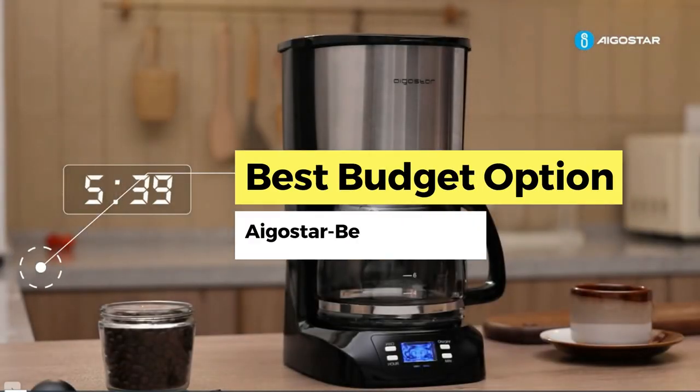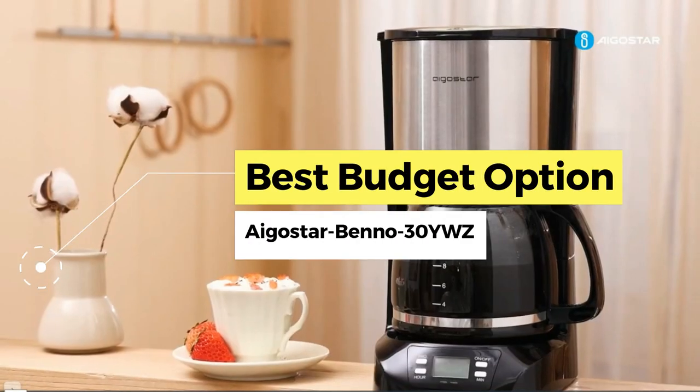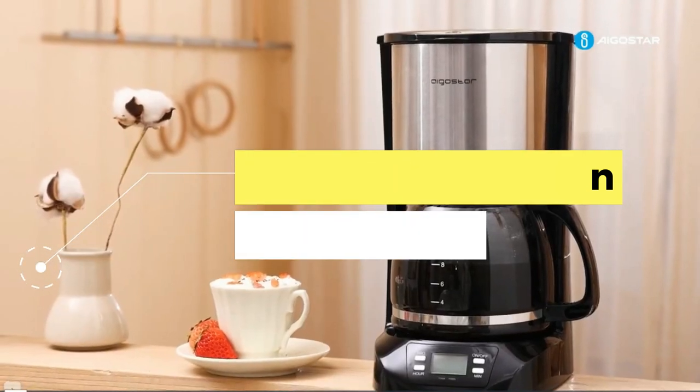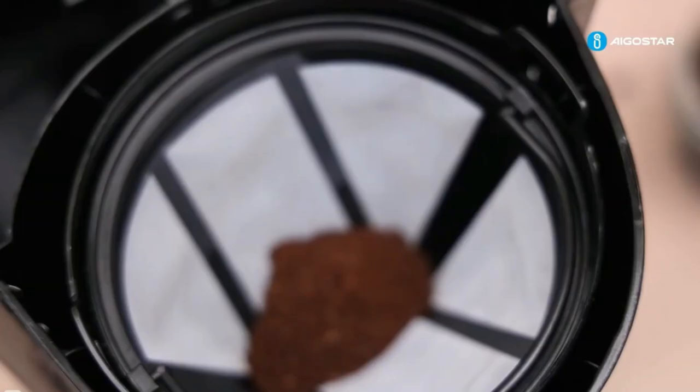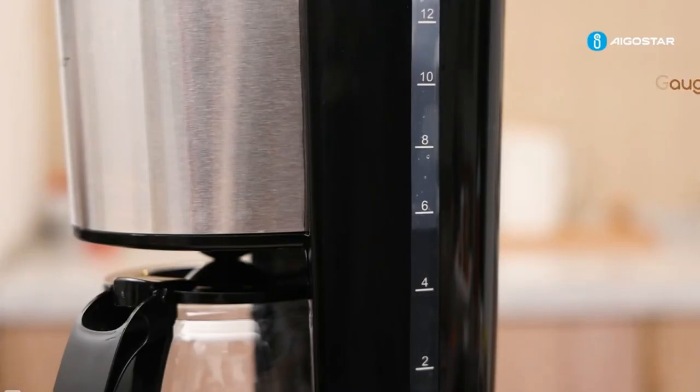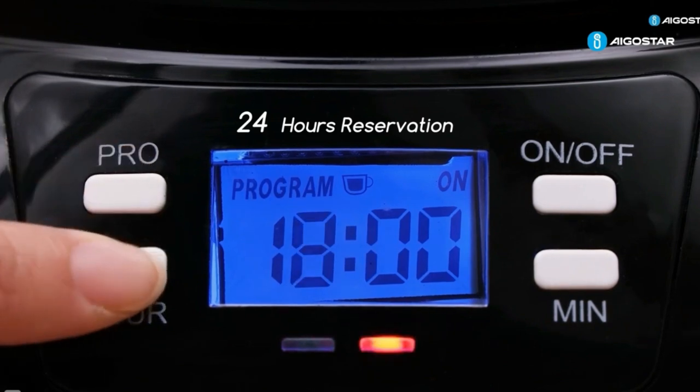First up, the best budget option: the EgoStar Benno 30YWZ. In the search for a budget filter coffee machine that effectively makes delicious black coffee, it's essential to identify the key buying factors.